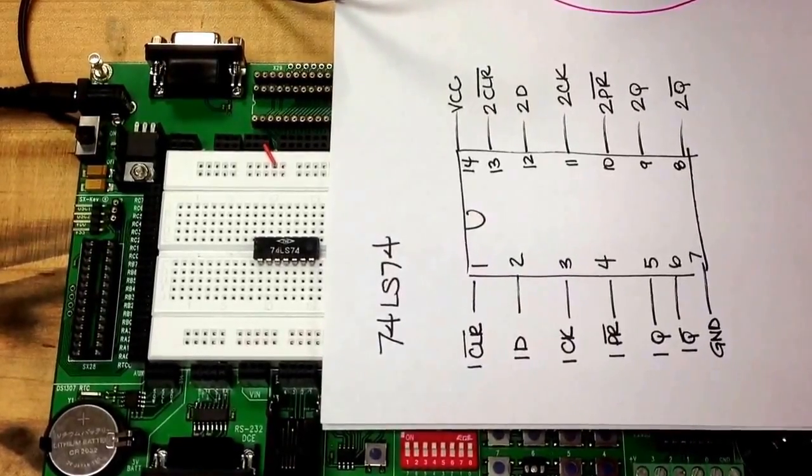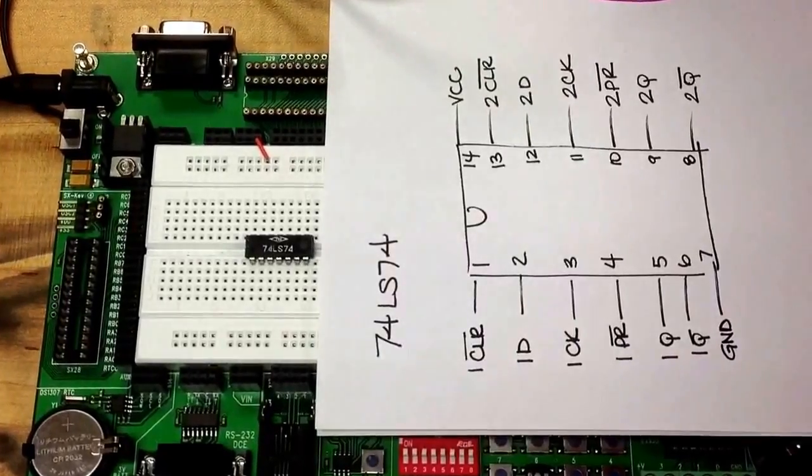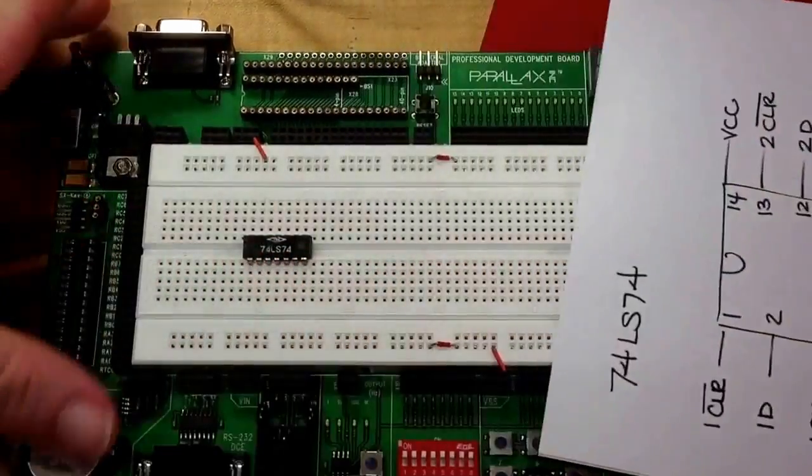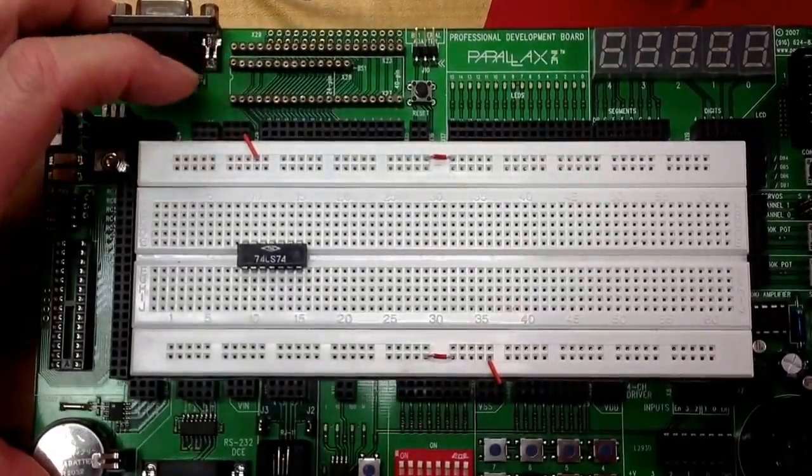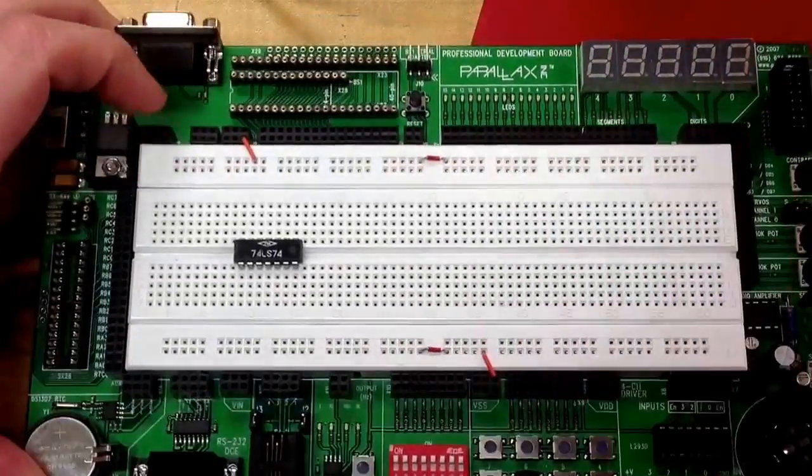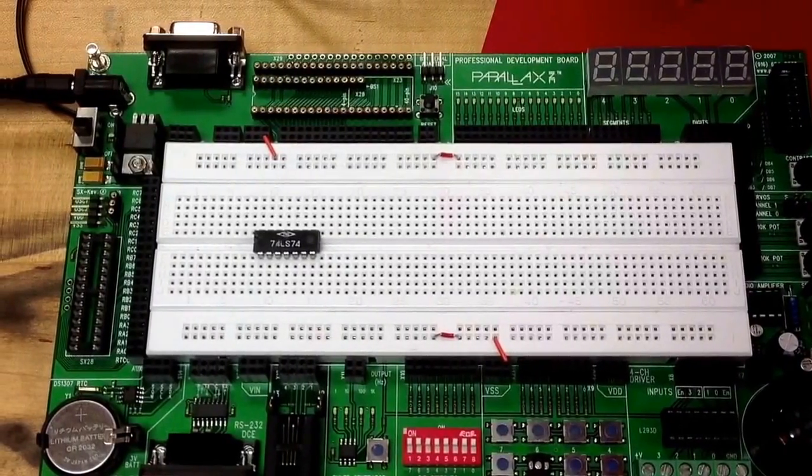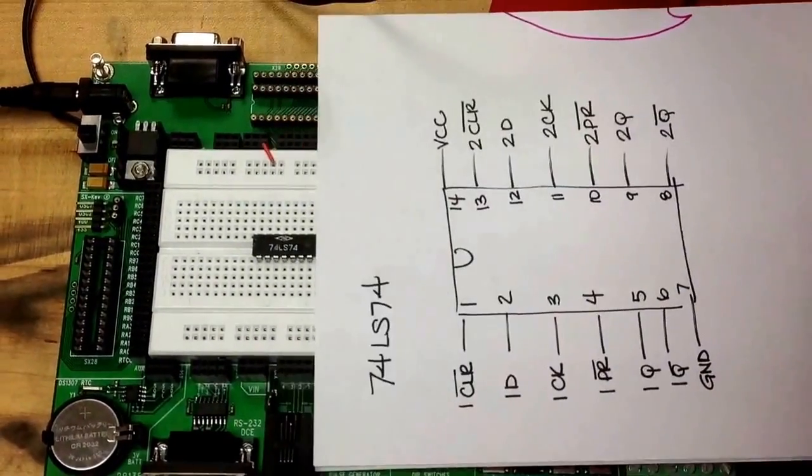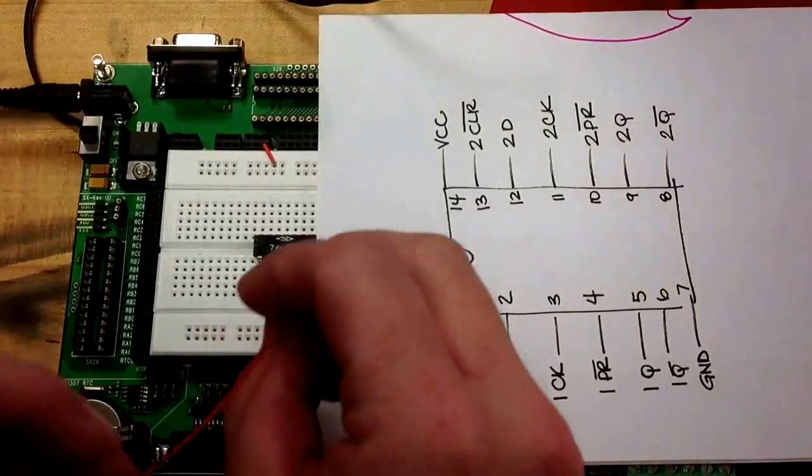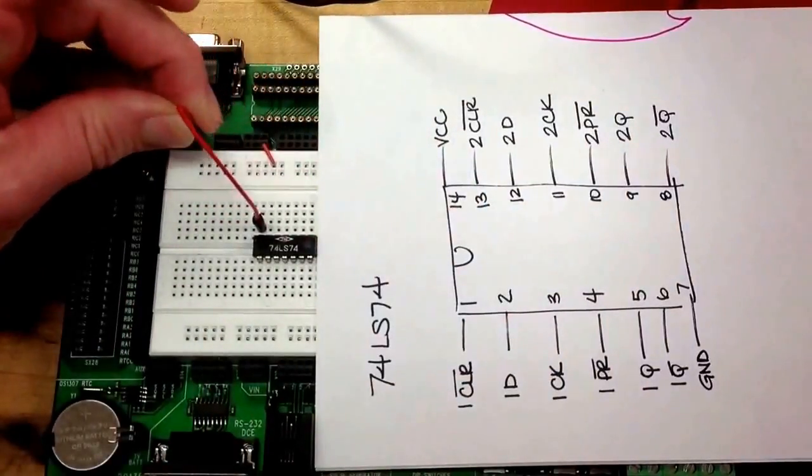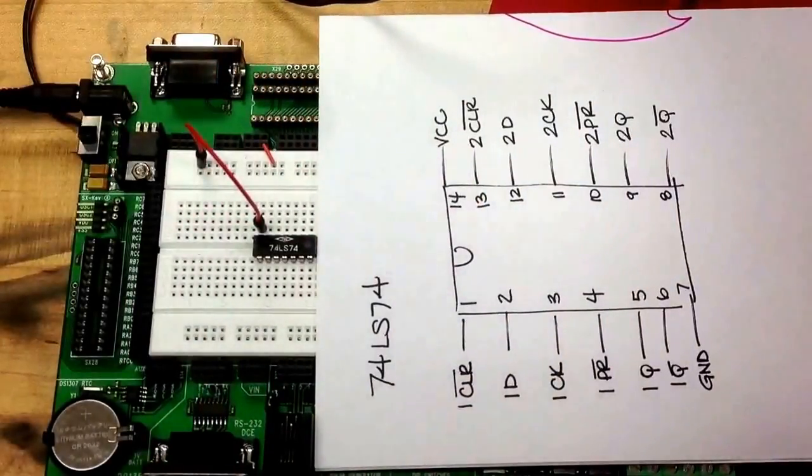I'm going to start by putting power and ground to my chip. I have buses already run on mine, so I have power here and ground down here, and the rails are completely connected. On my pinout diagram you can see that I need power here and I need ground below.